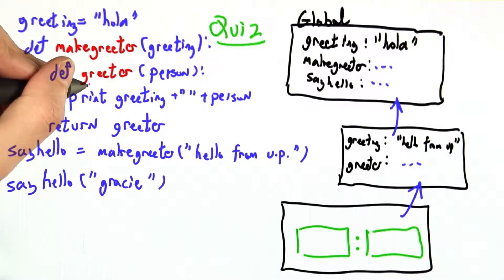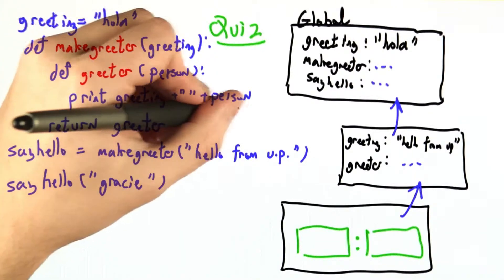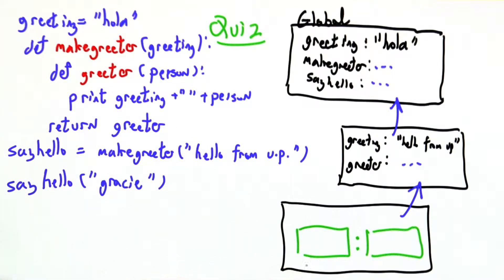One way to think about this is to remember the rules for function calls. You take the function body and you evaluate it in the new argument.